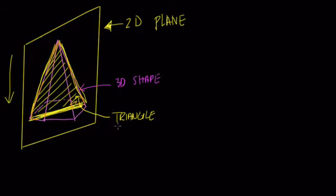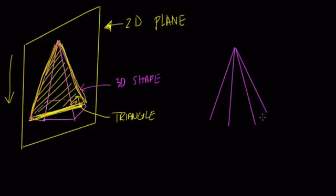If you had a similar kind of shape but cut it a little bit differently, you can see that you would actually be able to get other shapes. That's part of the beauty of these kinds of problems — depending on how you cut, you will get different shapes. It's a wonderful topic.